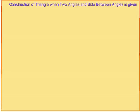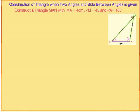Now you will learn construction of triangle when two angles and the side between the angles is given. Construct triangle MAN with MA equals 4 cm, angle M equals 45 degrees, angle A equals 100 degrees. Draw a rough sketch of the triangle and label it with the given measurements.